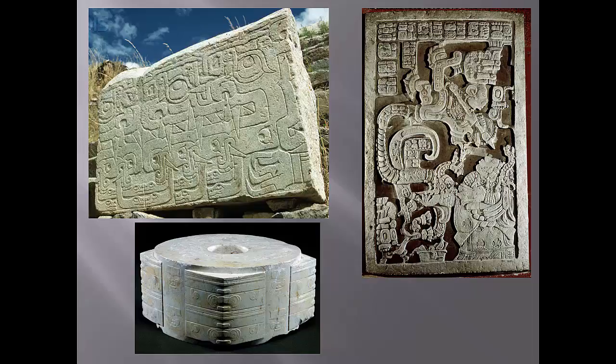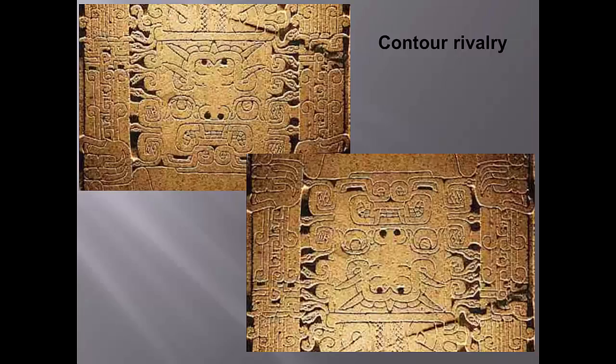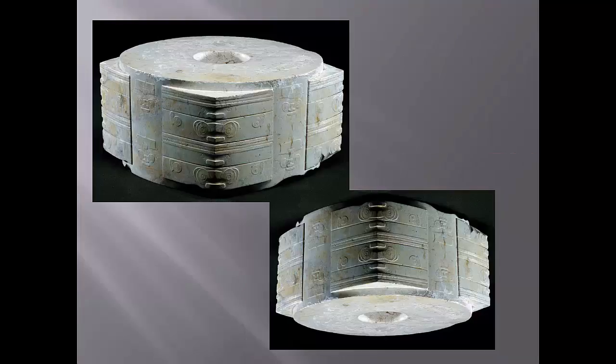Remember the Jade Kong, or for that matter the Sphinx or the Lamassu? One way that form sometimes reinforces this message of transformation or shamanism is a technique called contour rivalry. An image may be viewed as depicting one thing when viewed a certain way, but if the image is flipped or turned, the same lines that formed the previous image now make up an entirely new design. Note by contrast that the Jade Kong was designed so that the design persisted even when the object was turned over — the Chinese were very big on continuity. Contour rivalry in the art of the Americas signals change.